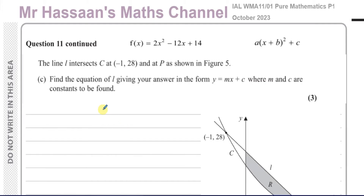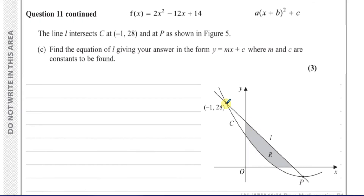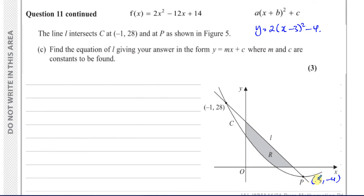Now for part c, the line L intersects the curve C at (minus 1, 28) and at P, which has coordinates (3, minus 4), as we found from completing the square. Find the equation of line L in the form y = mx + c, where m and c are constants to be found. We know the line passes through (minus 1, 28) and (3, minus 4).